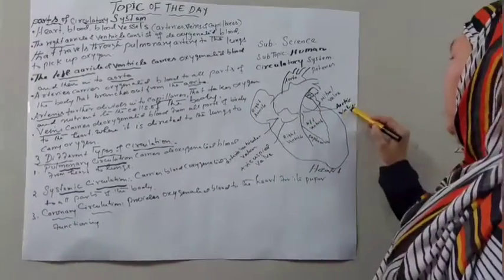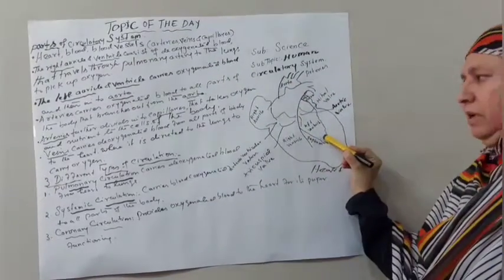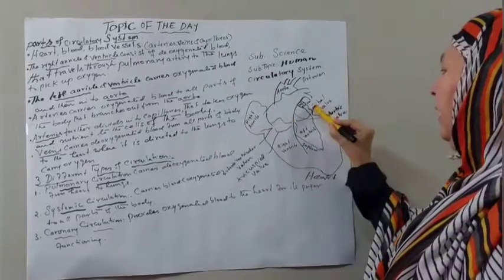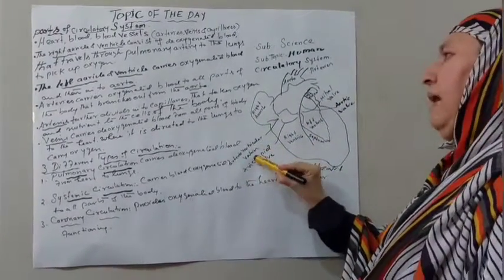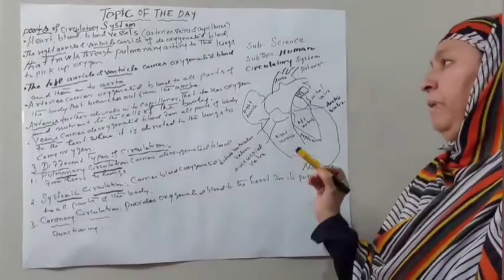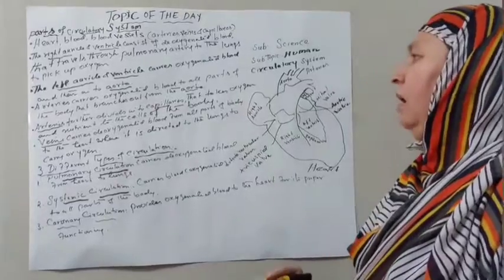There is an aortic valve between aorta and left ventricle. The right auricle and left auricle is divided by arterioventricular valves. And the important parts of circulatory systems are